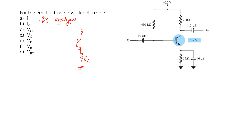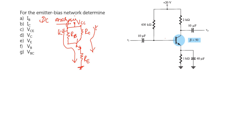After redrawing, you will have RE, RC, RB, and RB with VCC in the circuit. Now you have to apply KVL across the input side and KVL across the output side.